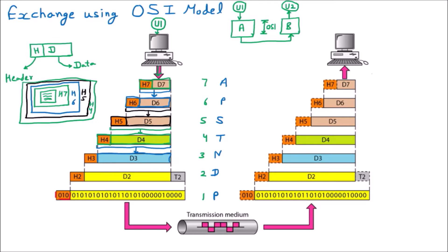D3 means the data arriving at the third layer, the network layer. The network layer adds its header H3 - one more envelope is applied - and then it is forwarded again.